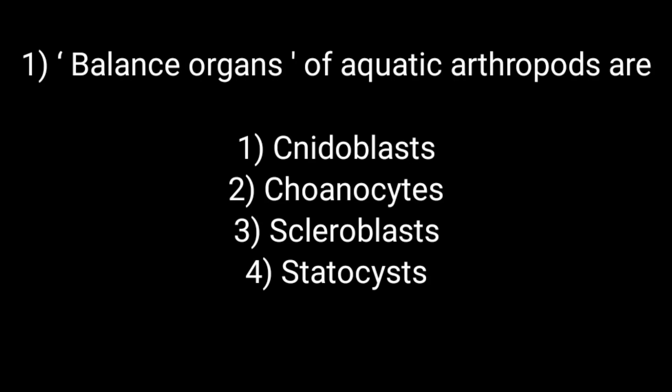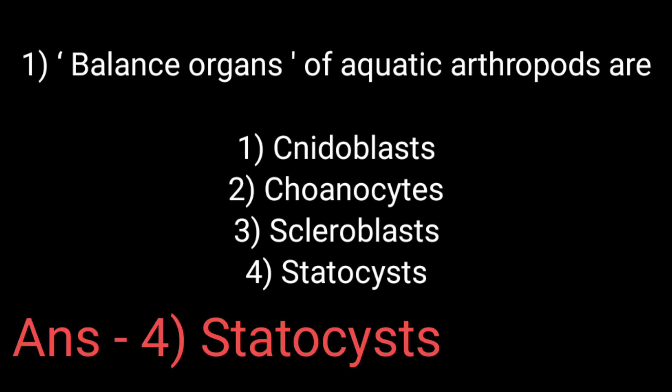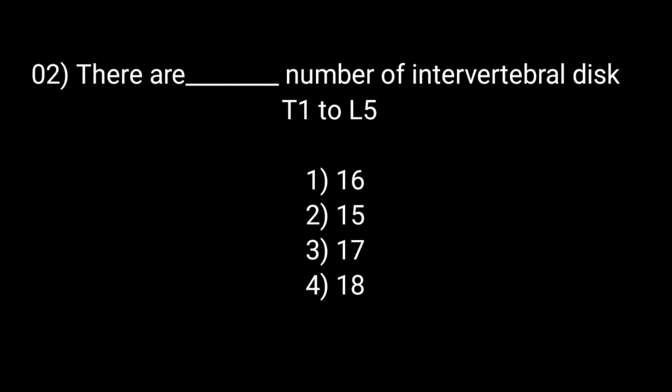Balance organs of aquatic arthropods are: Option 1 Neidoblast, Option 2 Conocytes, Option 3 Scleroblast, Option 4 Statocyst. The answer is Option 4 Statocyst. It is also called the Balance Organ.